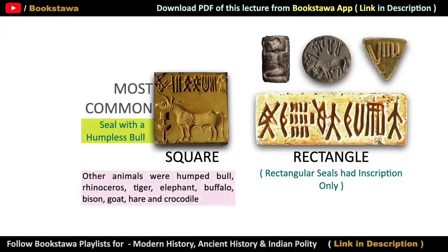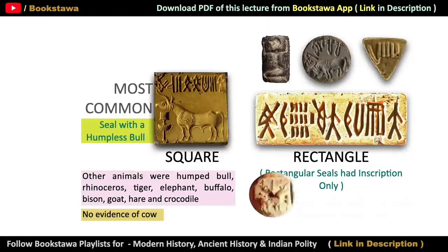Apart from the unicorn, there are many seals on which other animals are depicted, such as the humped bull, rhinoceros, tiger, elephant, buffalo, bison, goat, hare and crocodile. Apart from the unicorn, there are 9 to 10 different animals which can be seen on the seals. No other animal can be seen on the seals — not even a cow.